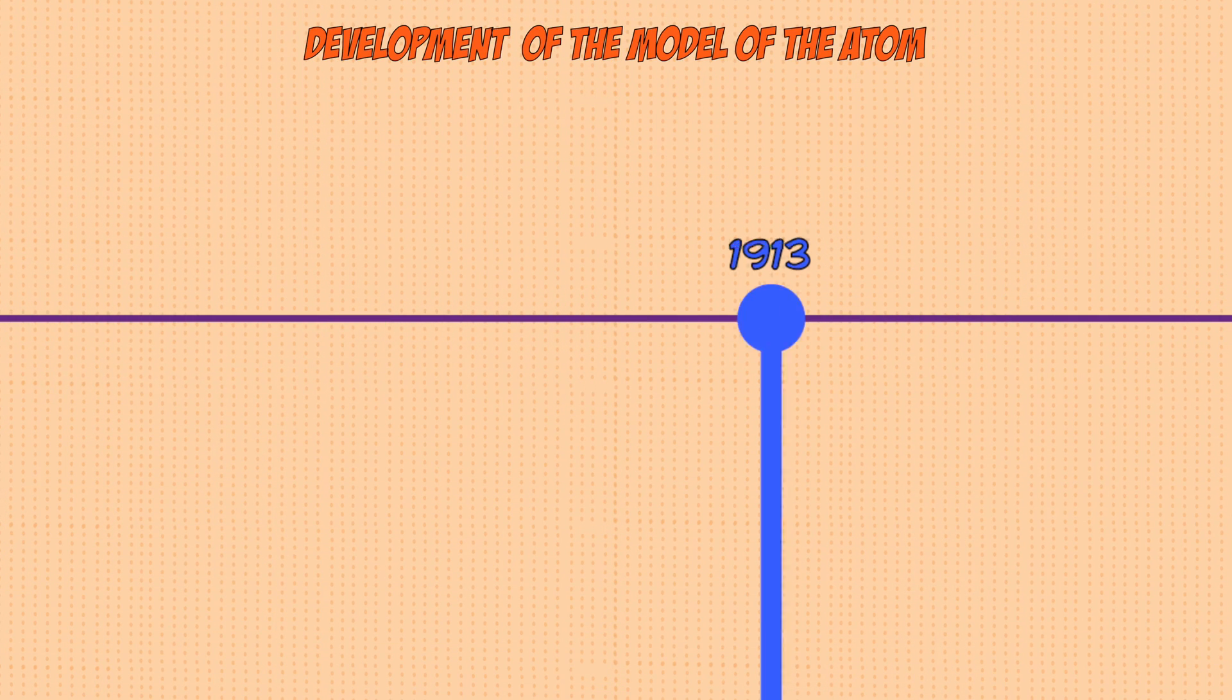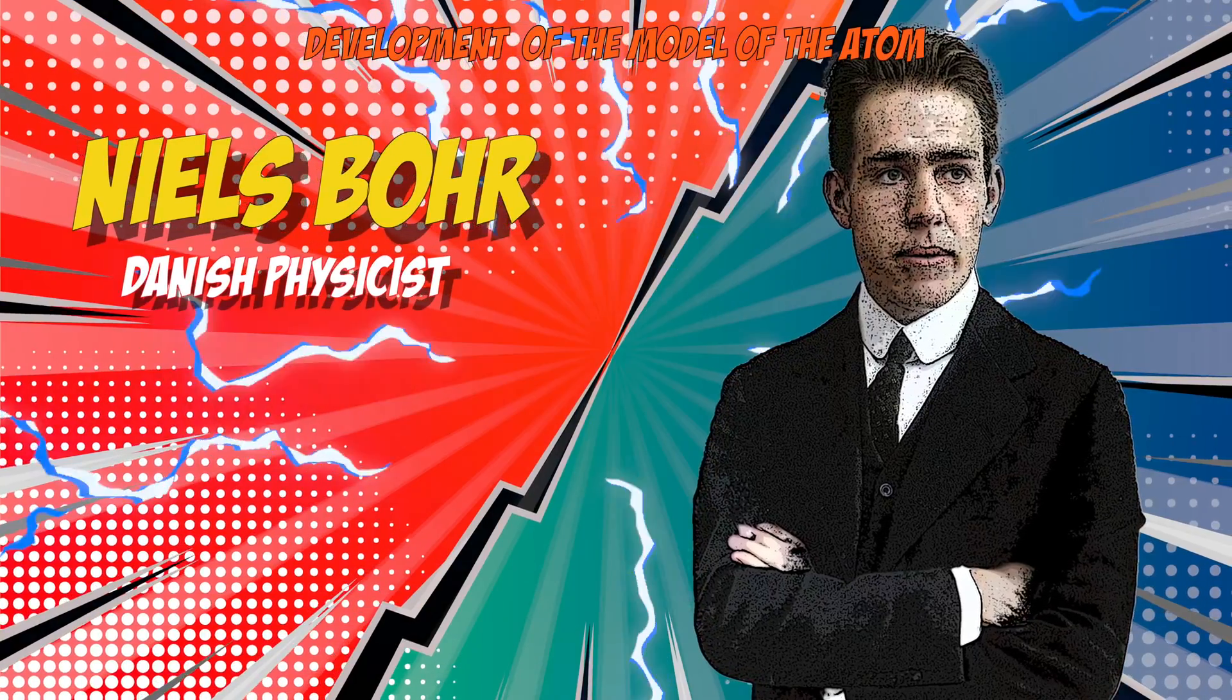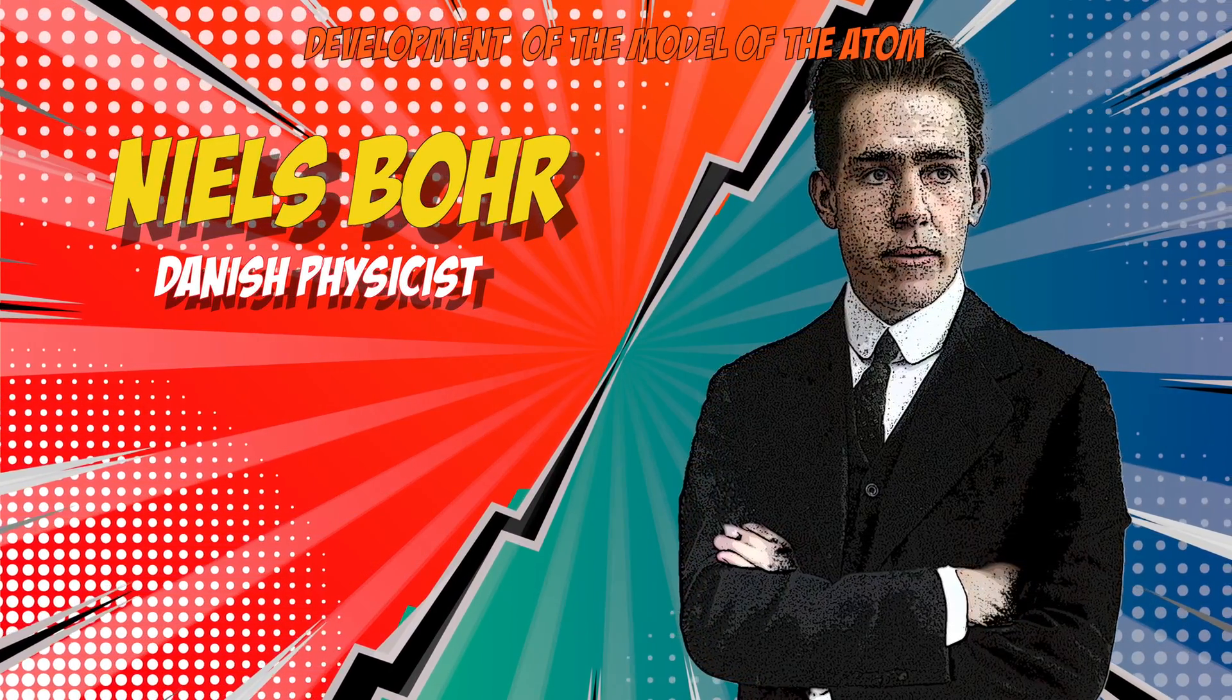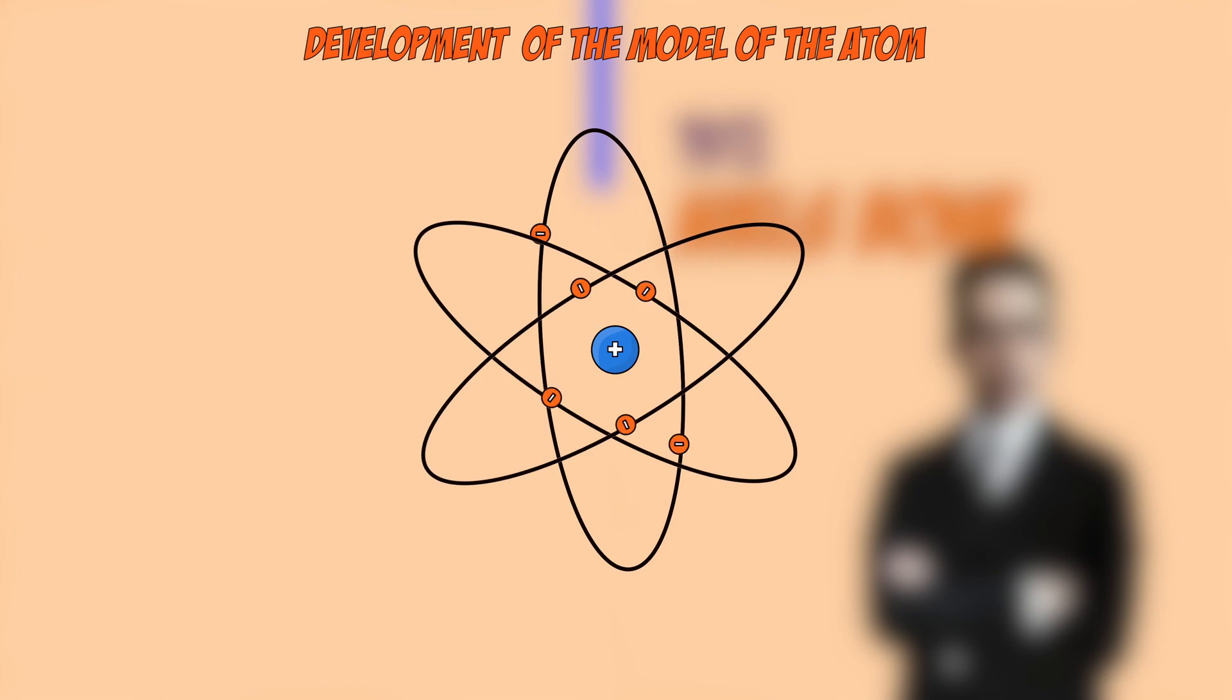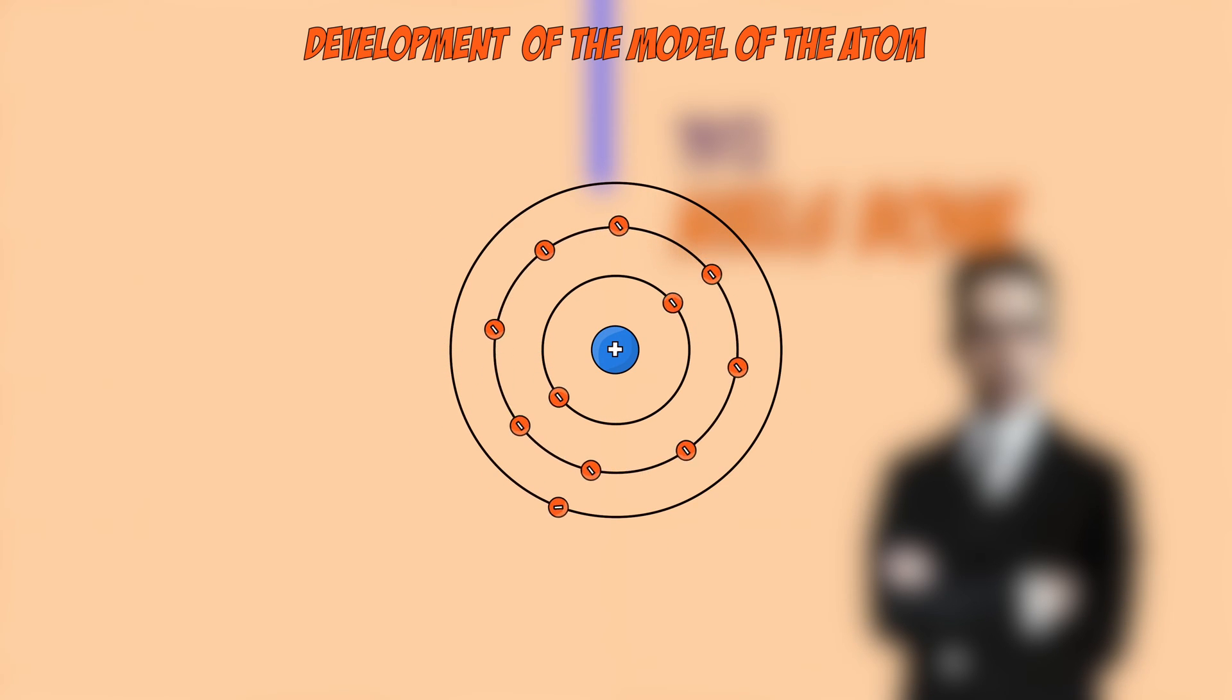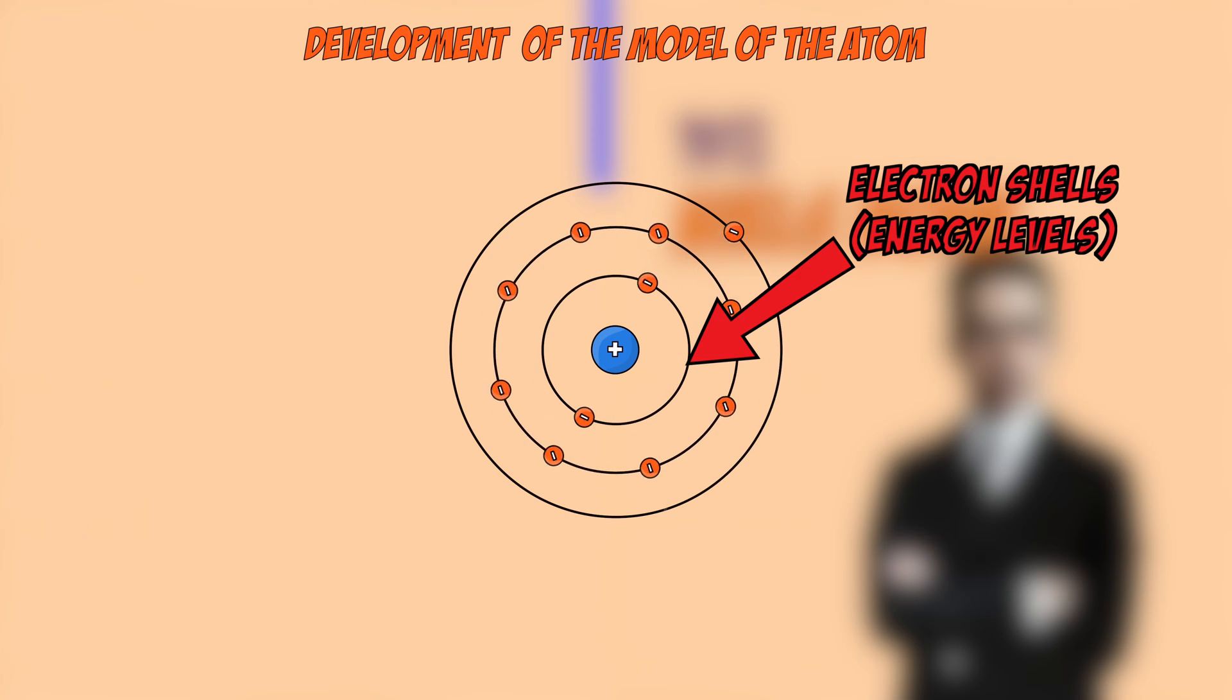The next development was in 1913 with Niels Bohr. He refined the nuclear model, specifically the area containing the electrons around the outside. He discovered that electrons didn't just orbit the nucleus randomly, but instead at specific distances where some were close and some were far. The path that these electrons took around the nucleus was known as electron shells or energy levels.